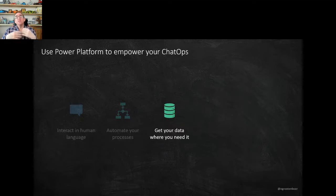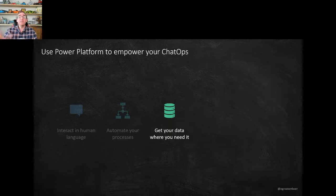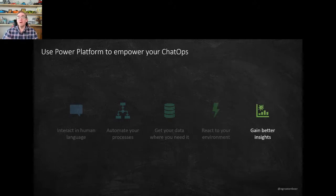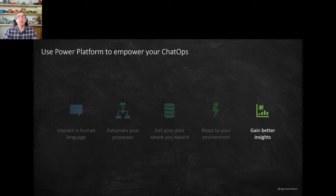The Power Platform allows us to catch data where we need it. If our data lives in Dataverse it's very easy to interact with across the platform. Power Automate can connect to external data sources, react to our environment, and give notifications. Finally, we can gain better insights using Power BI for reports and Power Apps to create low-code apps for quickly searching over our data.